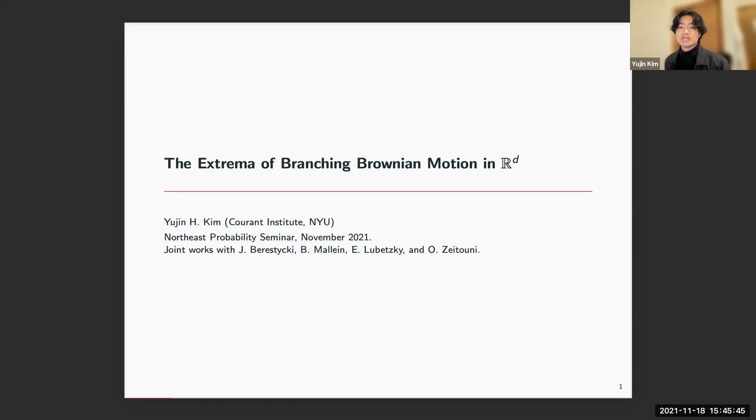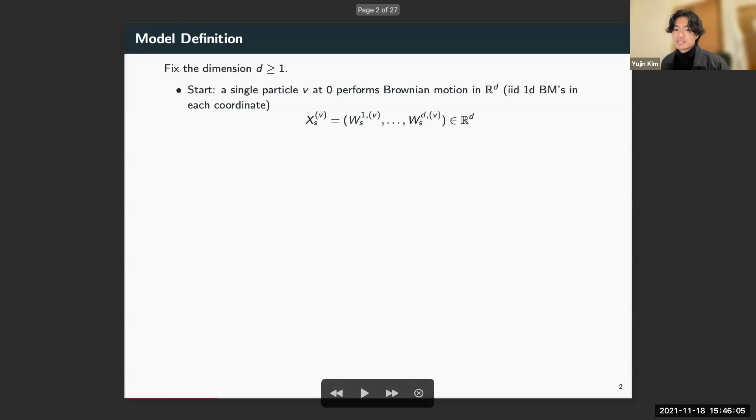In particular, we study the extremal process of branching Brownian motion, which has received a lot of attention for reasons I'll explain soon. The new results here will be based on two works: one with Al Lubetsky and Ofer Zeitouni, and another forthcoming work with Al, Ofer, Julien Berestycki, and Bastien Mallein.